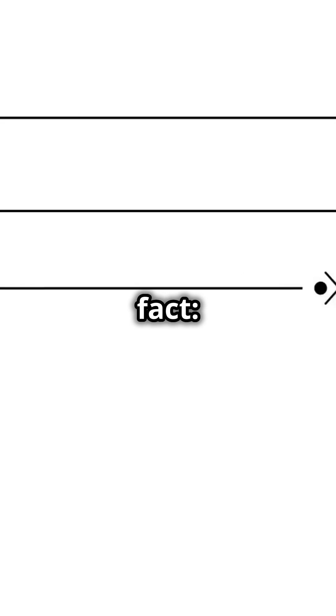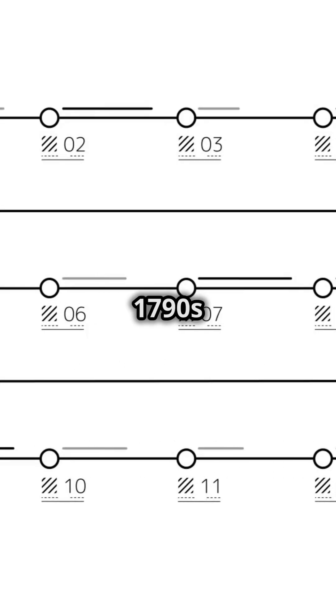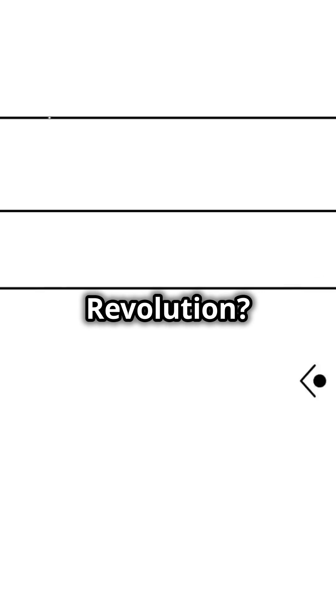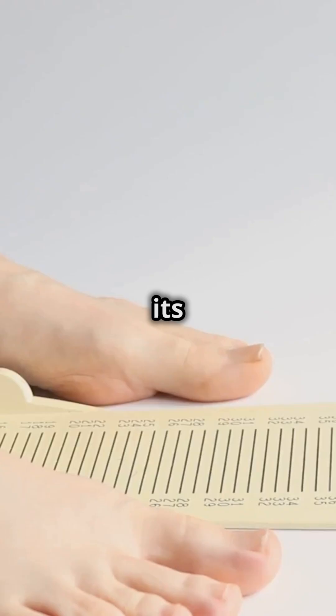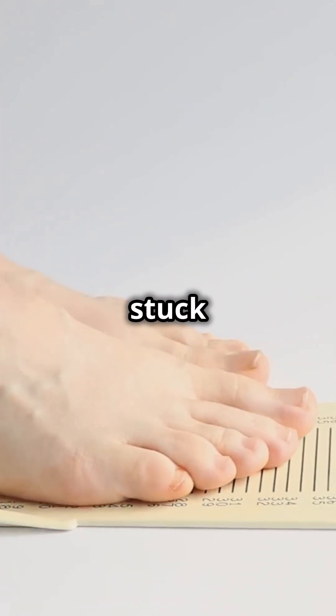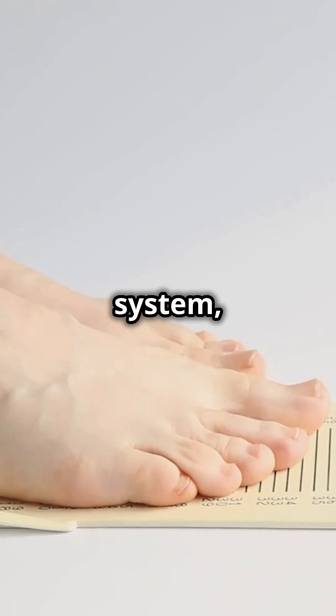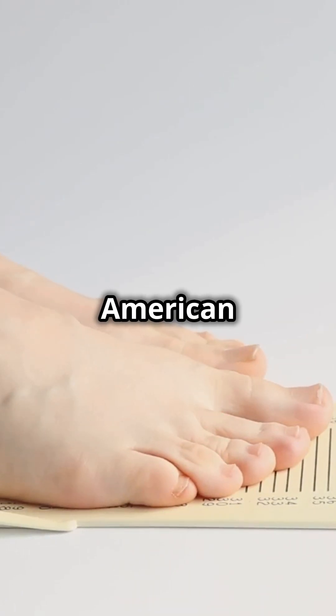Fun fact. Did you know that the metric system was first proposed in the 1790s during the French Revolution? It aimed to create a universal standard of measurement. Despite its efficiency, the U.S. stuck with its quirky traditional system, making it a unique part of American identity.